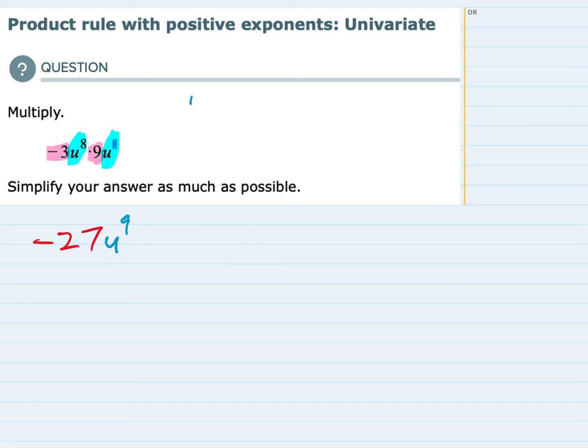And just thinking about what that means. That means if we had 8 u's being multiplied, that would be our u to the 8th power. And then we're multiplying it by u to the 1, which would actually be one more u. So how many u's do we have being multiplied? We have 9. And this is as simplified as we can go.